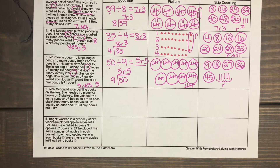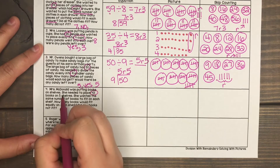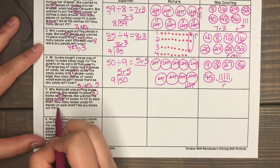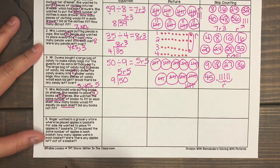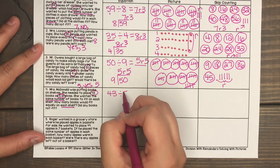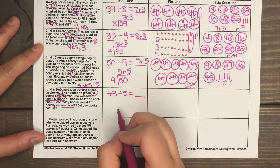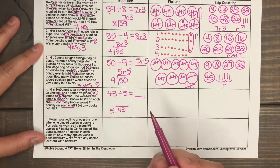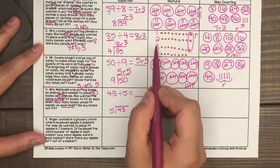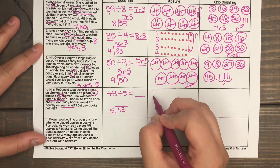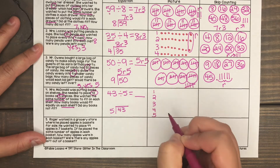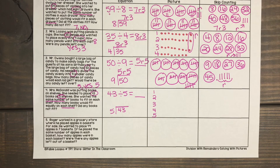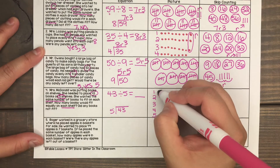Let's do one more together. Mrs. McDonald was putting books on shelves. She needed to place 43 books on five shelves. She wanted the same number of books to fit on each shelf. How many books would fit equally on each shelf? Did any books not fit? My division here is 43 divided by five. I know my fives — when I skip count by five, I never say the number 43 — so I know I'm going to have a remainder. Let's set up my groups: one, two, three, four, five groups representing the five shelves. I'll show dots to represent how many books are going on each shelf evenly, distributing one for each shelf.